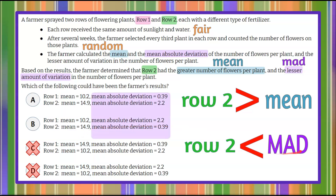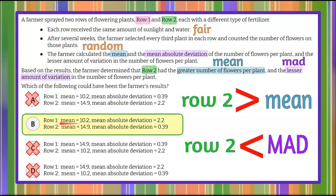Now we're going to talk about mean absolute deviation or MAD. Row two had less variation, so the average number per plant was closer to the average than in row one. We want a smaller MAD value for row two. So 2.2 is greater than 0.39, meaning row two's MAD is smaller in answer choice B, so we're going to eliminate choice A. Our answer choice is B.